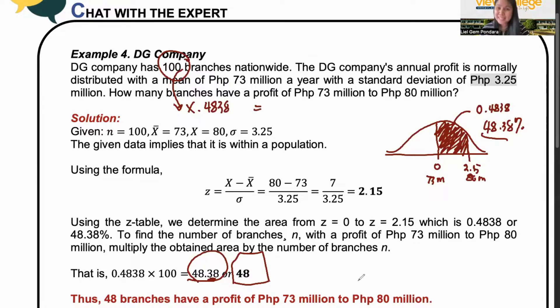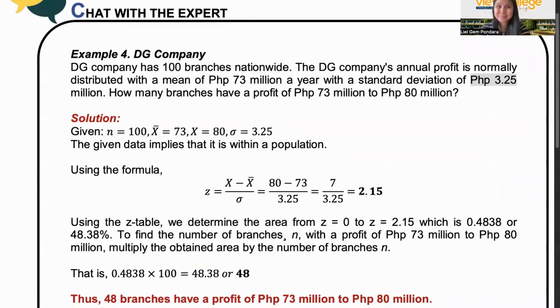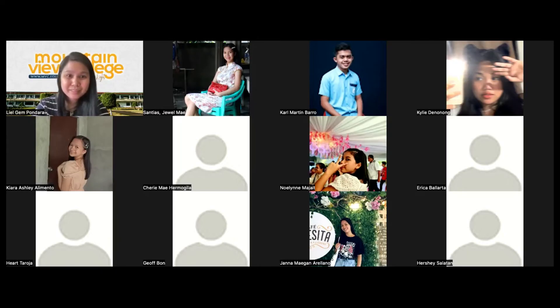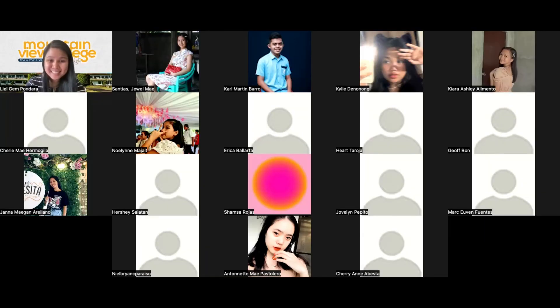We'll have more of these problems in the next lesson. But for this lesson, again, remember, is it within a sample or within a population? Second, solve for the Z score. And third, interpret the Z score. Any questions? Any questions? No questions? Let me stop the recording.